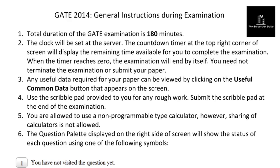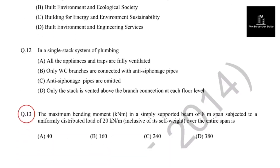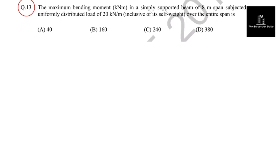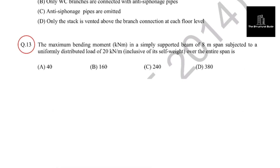Hello and welcome to the Structural Guide platform. In this video I am going to discuss the GATE 2014 question paper for the Structures subject. Beginning with the first question: the maximum bending moment in a simply supported beam of 8 meter span subjected to a UDL of 20 kilonewton per meter inclusive of itself over the entire span.